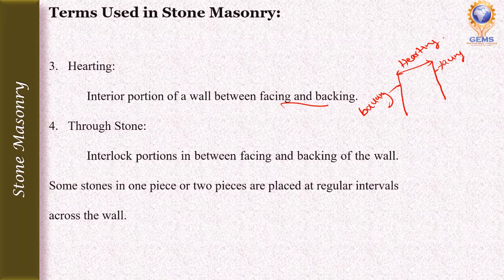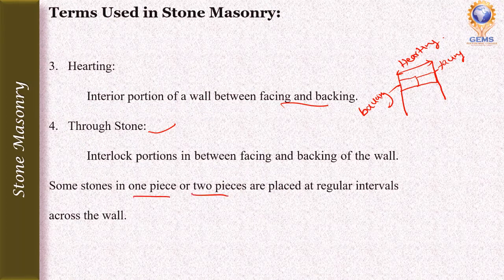The fourth term is through stones. Through stones interlock the position between facing and backing of the wall. Some stones in one piece or two pieces are placed at regular intervals across the wall — this is called through stones.